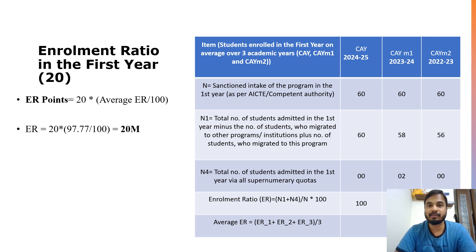The first part is the enrollment ratio in first year, which carries 20 marks. The greater the number of students entering the department, the higher the marks. There is no major complication involved. As you look at the table: N is the sanctioned intake of the program in the first year as per norms; N1 is the total number of students admitted in first year minus students who migrated to other programs or institutions, plus students who migrated into this program.